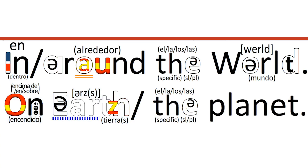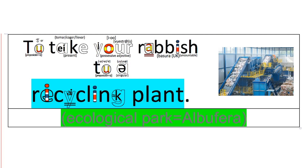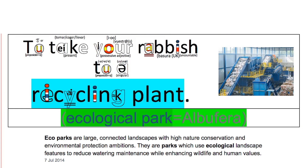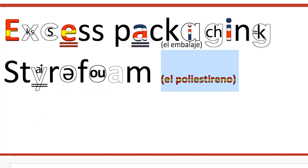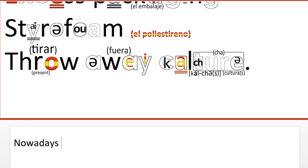Don't mix these prepositions around. We don't talk about ecological parks — ecological parks in English are not the place where you take your recycling; they are forests or maybe jungles. We call them recycling plants in English. You take your rubbish to a recycling plant. You could also talk about excess packaging. Styrofoam would be good vocabulary to learn — Styrofoam is impossible to recycle. Nowadays we live in a throw-away culture.